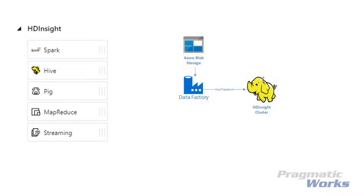Depending on both your use case and what technology you are familiar with, each of these technologies provide great capabilities to do tasks such as transformations, machine learning, querying, and analytics at scale. One of the great benefits of an HDInsight cluster is the ability to scale the cluster — the amount of nodes and power — that can handle your workload. When we configure that on-demand HDInsight cluster, you'll see we have the options to scale the cluster to our need.